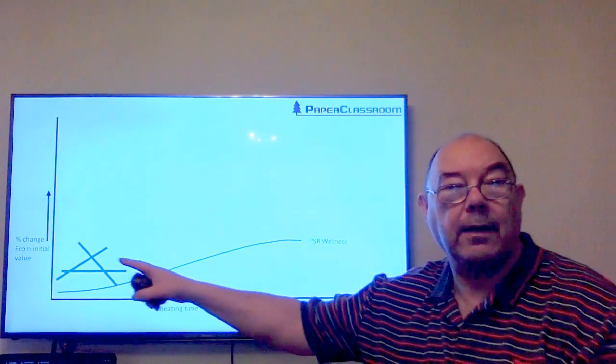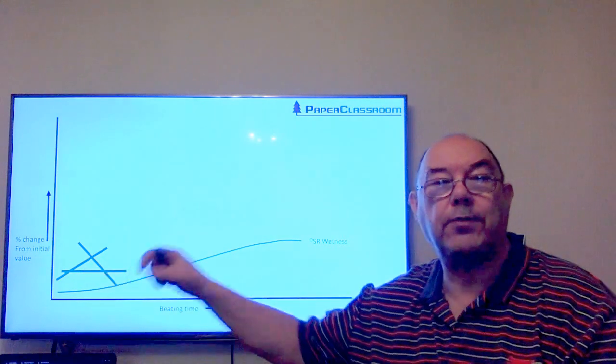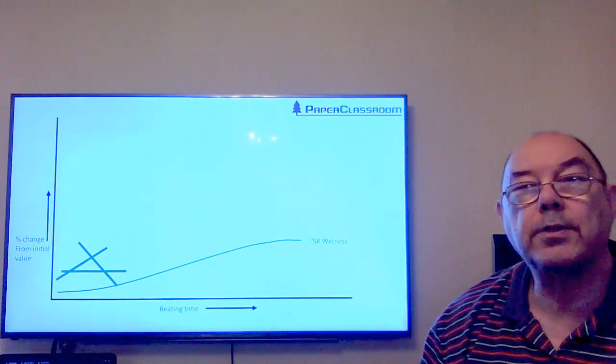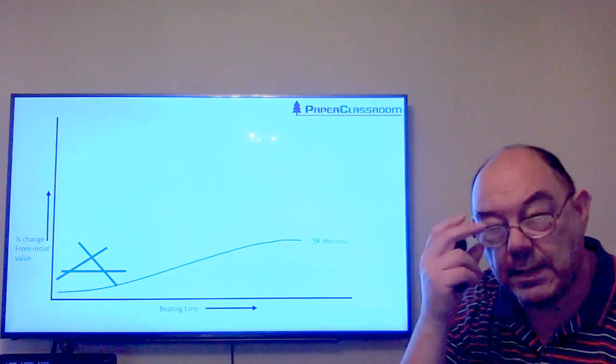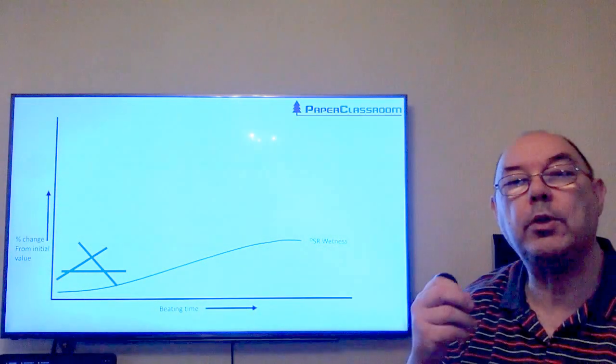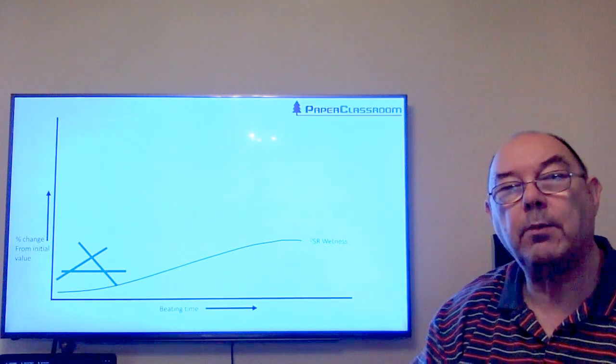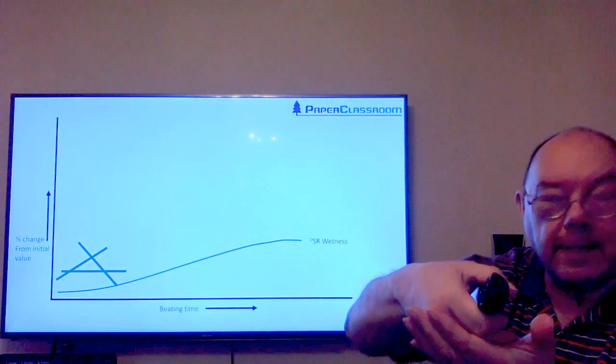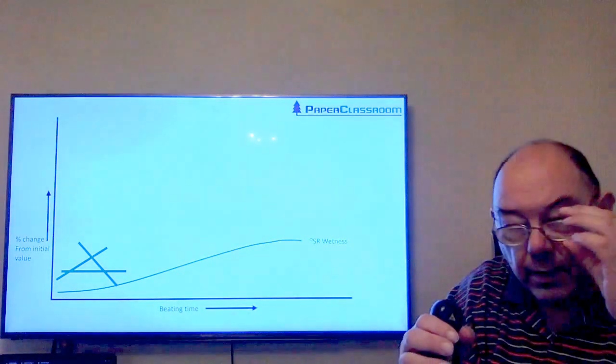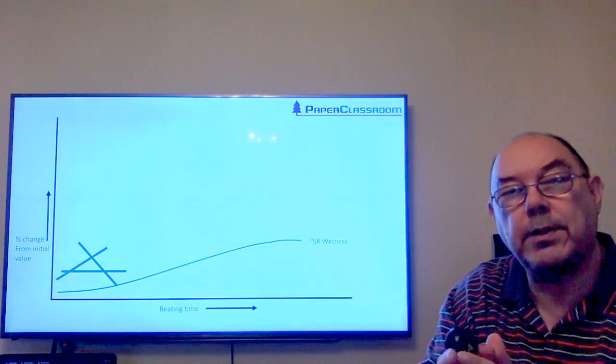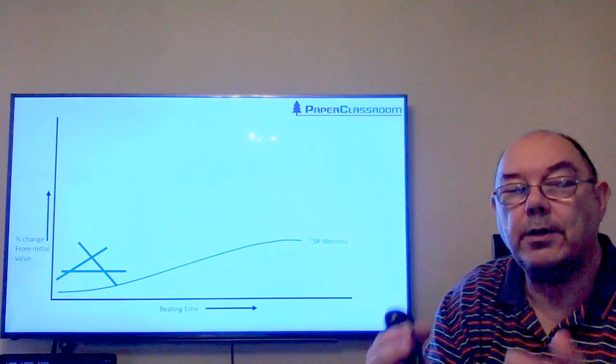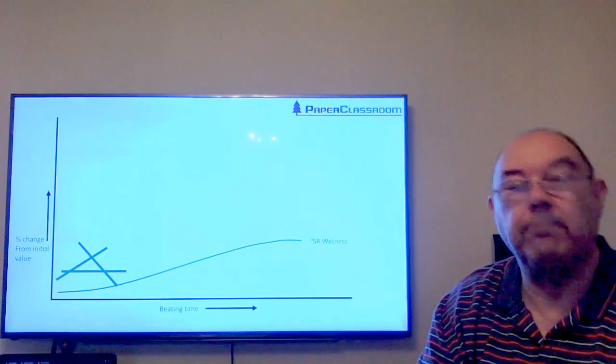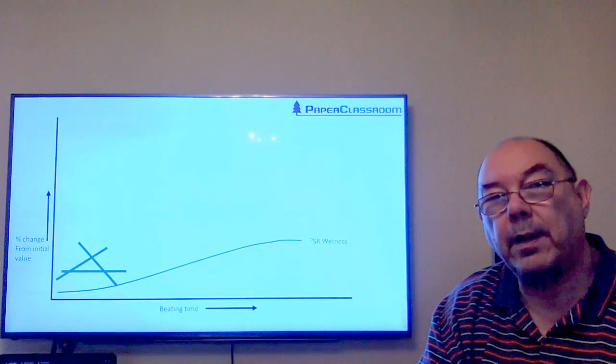You've got large open areas for the water to drain through quickly. As the fibers circulate around in the beater system and time goes by, we're doing work on the fibers. The fibers are getting crushed between the knives on the beater roll and the knives on the bed plate. That force is doing two things to the fiber: internal fibrillation and external fibrillation.